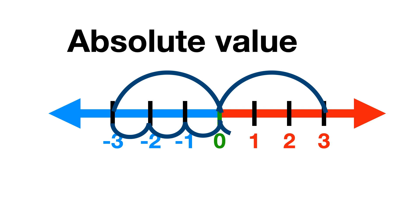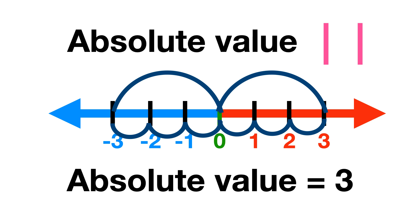There is a mathematical symbol to show the distance. It is called a number's absolute value. This is the absolute value sign. The absolute value of minus 3 and positive 3 is 3.